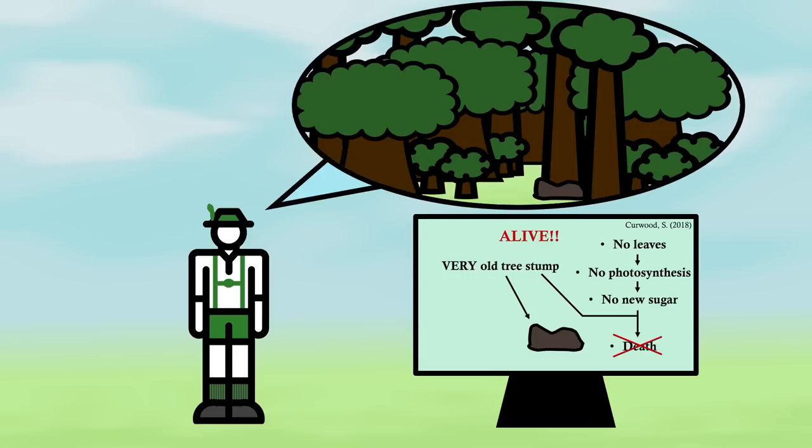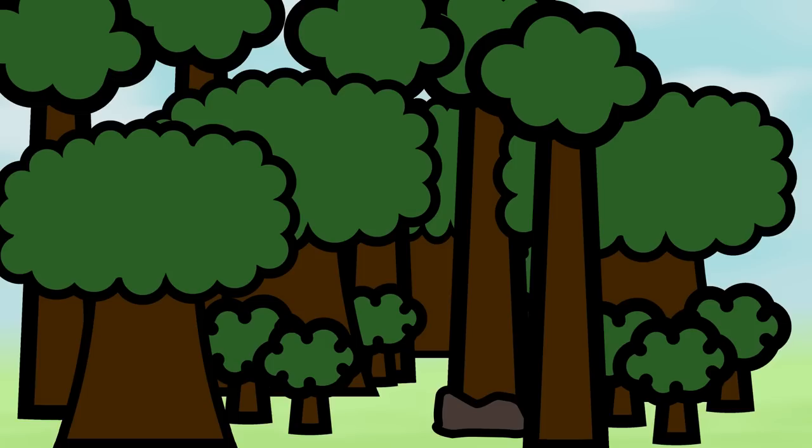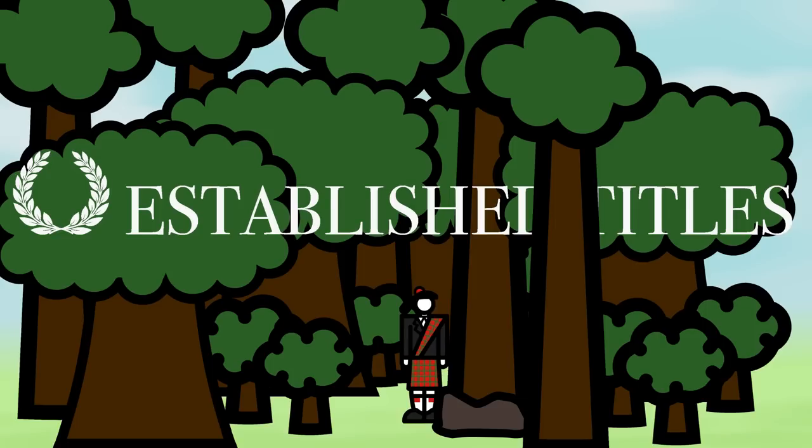Vorleben's explanation? The trees around it were pumping sugar into the stump, keeping it from death for hundreds of years. Trees are social beings, they are more than we take them for. And that's why I've partnered with Established Titles, who have created a novel way to preserve the natural woodlands of Scotland while helping restoration efforts worldwide.